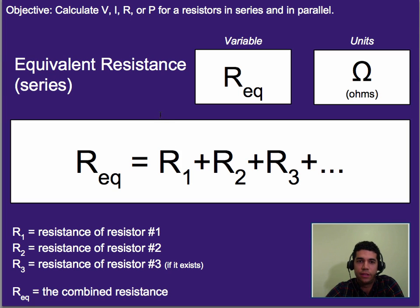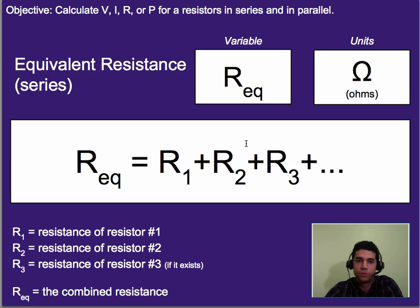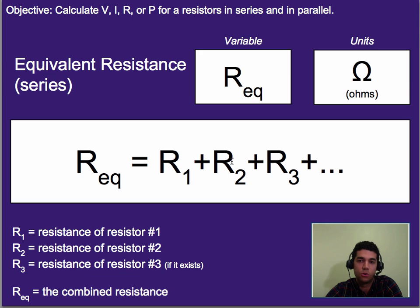To calculate the equivalent resistance, or think of it as the combined resistance of this and this, what we do for series circuit is we just add them up. So if there are two resistors, like there are in this case, we would have resistor one, its value, plus resistor two. So in our example back here, that would be two plus six, or eight ohms, would be the total or equivalent resistance, the combined resistance of those two resistors.